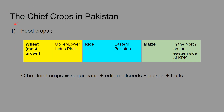Pakistan has chief crops which can be food crops or non-food crops. The three main food crops are wheat, which is the most grown, then rice, and then maize. Wheat is grown in the upper and lower plains, rice in eastern Pakistan, and maize in the north and KPK. Other food crops include sugar cane, edible oil seeds, pulses, and fruits.